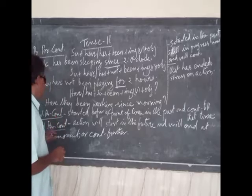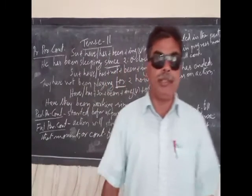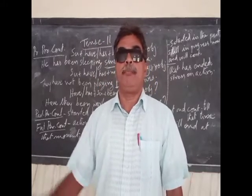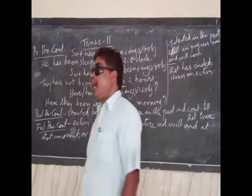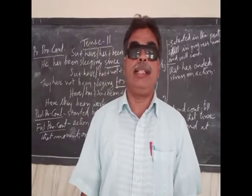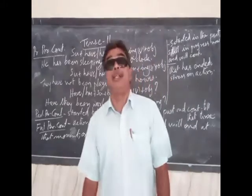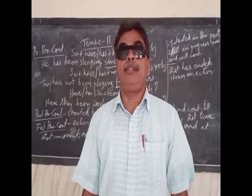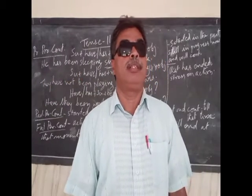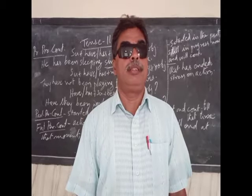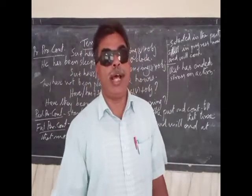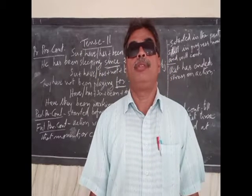Next is future perfect continuous tense. The sentence structure is: subject plus will have been plus ING verb plus object. For example: 'they will have been staying there for one month.' The negative sentence structure is: subject plus will plus not plus have been plus ING form of the verb plus object. For example: 'she will not have been finishing the work by the time you reach there' or 'they will not have been waiting for you by the time you reach there.'